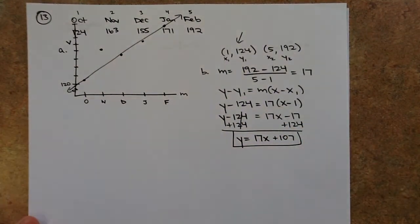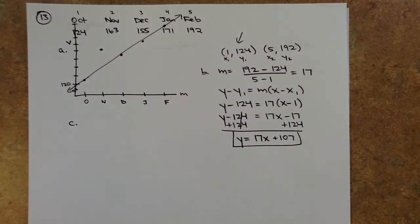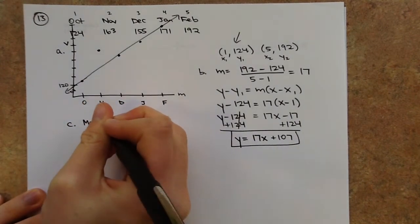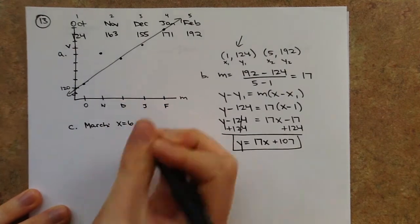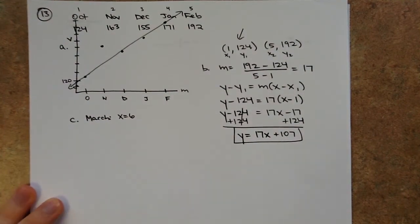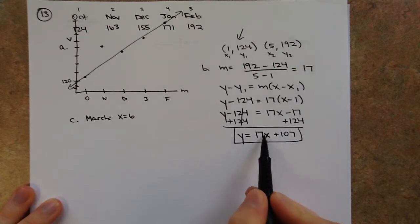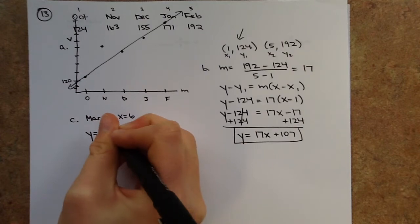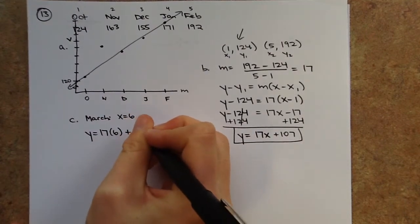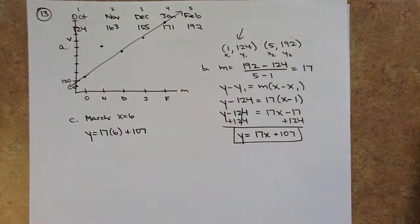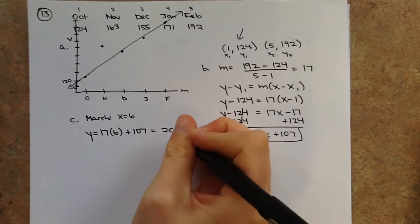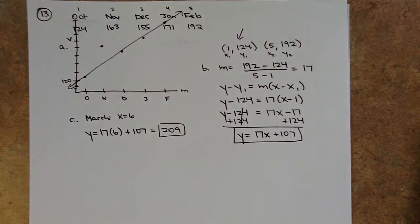For part C, use the prediction equation to predict emergency room visits for March. Following the pattern, February is month 5, so March is month 6. Plug x equals 6 into y equals 17x plus 107: 17 times 6 plus 107 equals 102 plus 107, giving 209. So the prediction is 209 emergency room visits.